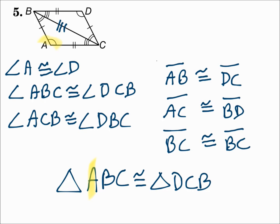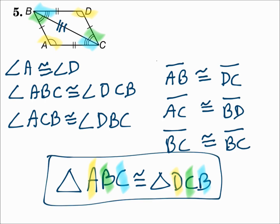If A is first, that's the single arc, and angle D is the single arc in the other one. B is second — that's the double arc — and C is the double arc in the other one. C is last — that's the triple arc — and that matches B, which is the triple arc in the other one. Match up all of the corresponding parts, check the number of arcs and ticks, and then write the congruent statement matching up the letters when you say the triangles are congruent.